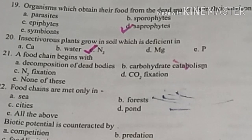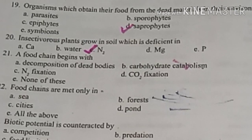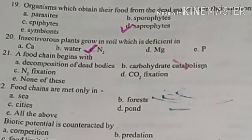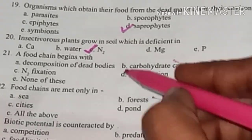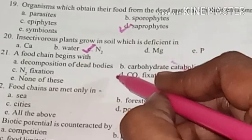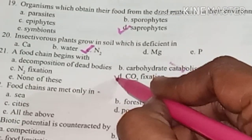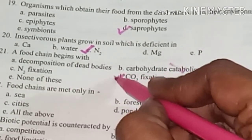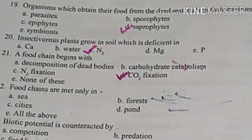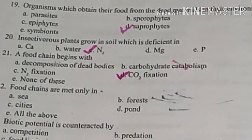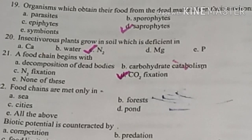A food chain begins with answer option D: Carbon dioxide fixation.